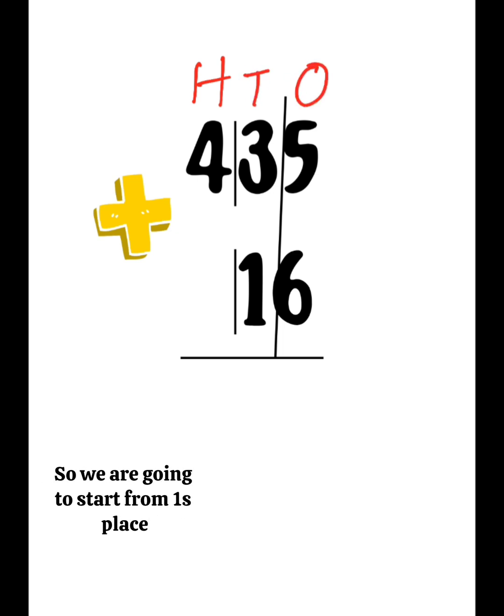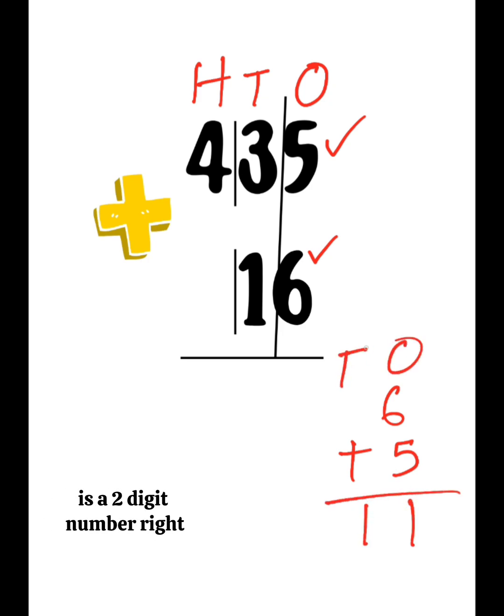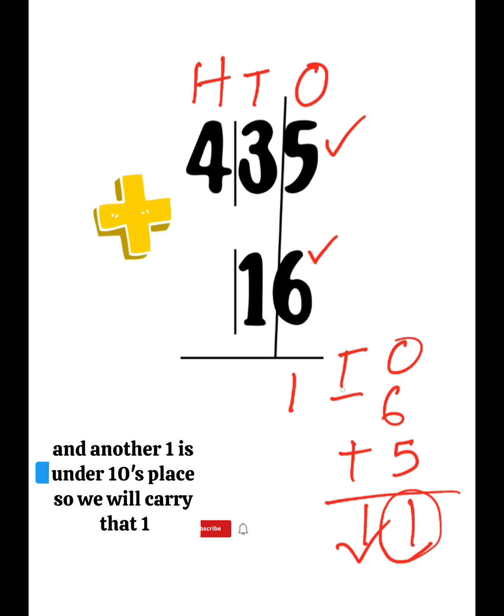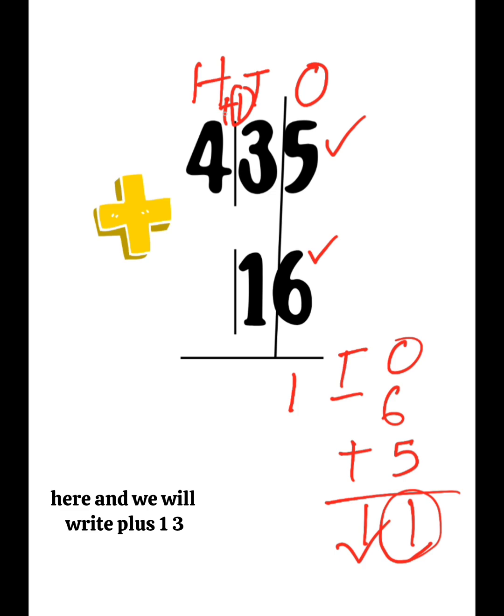We are going to start from the ones place. So here it is 6 and 5. 6 plus 5 is 11. This is a 2-digit number. The 1 goes under the ones place and another 1 is under the tens place. So we will carry that 1 here and write plus 1.